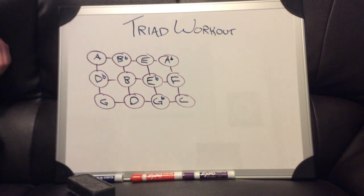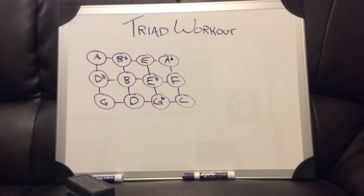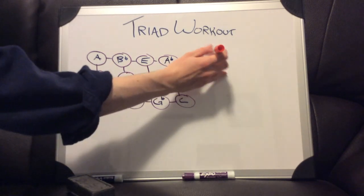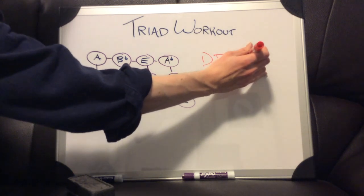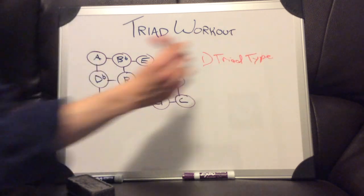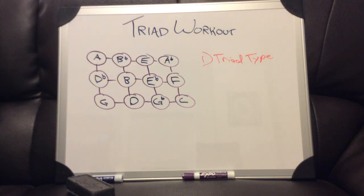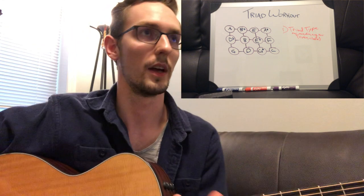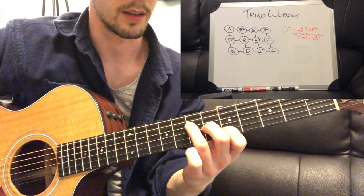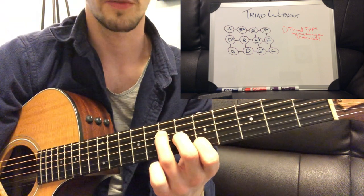From here we have to make a couple of decisions to start the exercise. The first decision is triad type — this could be major, minor, diminished, augmented, or sus — and whether it's open or closed. I'm going to pick major closed, because that's where we started in our triad journey. I've picked string groups 2, 3, and 4 and I've picked root position A major.